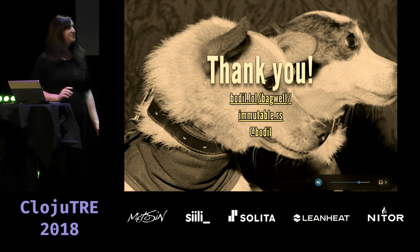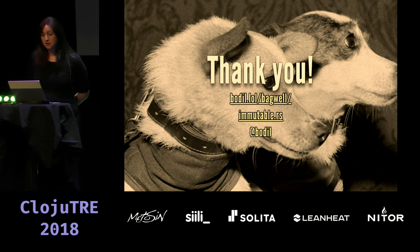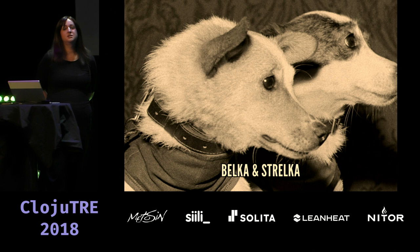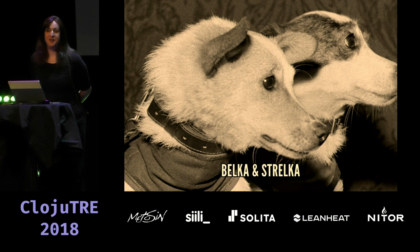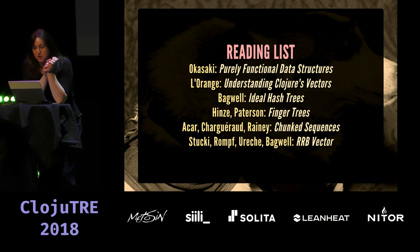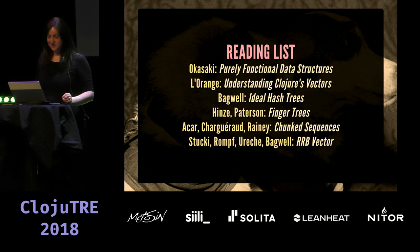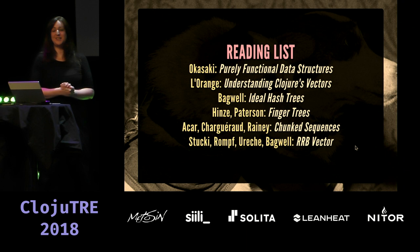If you want to review these slides, the top URL is the slide deck including the REPL you've seen. I wrote this data structure library in Rust — the second URL is for that. And that's my Twitter handle. I also want to take a moment to mention Belka and Strelka, the first cosmonauts to actually return from a successful space mission. Here's a reading list: start with the Okasaki book on purely functional data structures, then a couple of papers and blog posts about the data structures I mentioned, including finger trees. Transient sequences is another cool thing I've used to optimize my vector implementation.